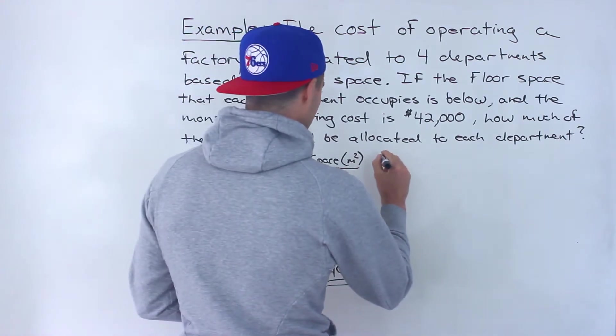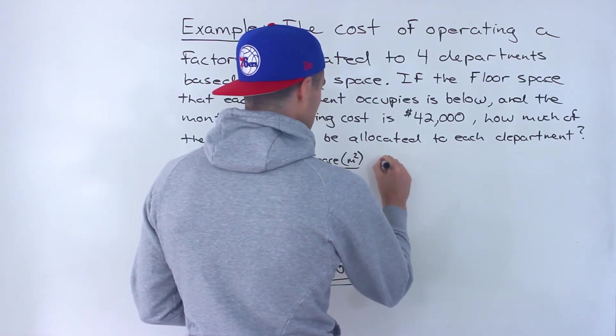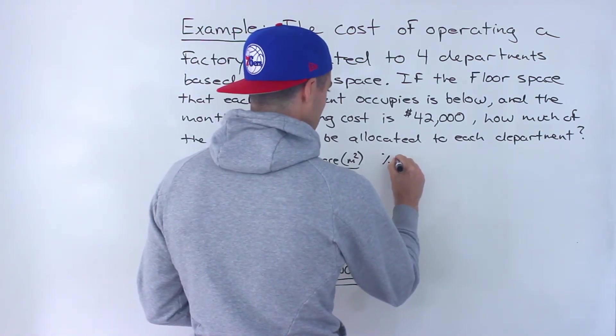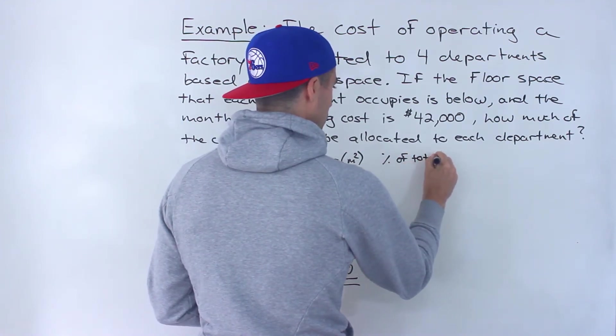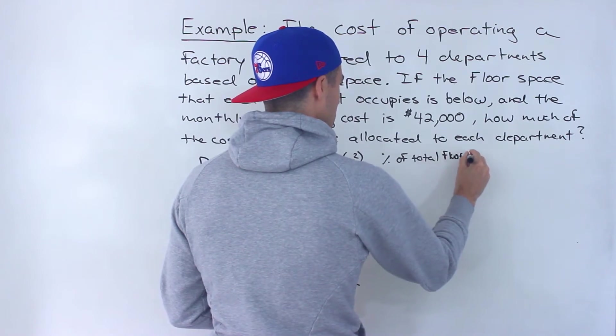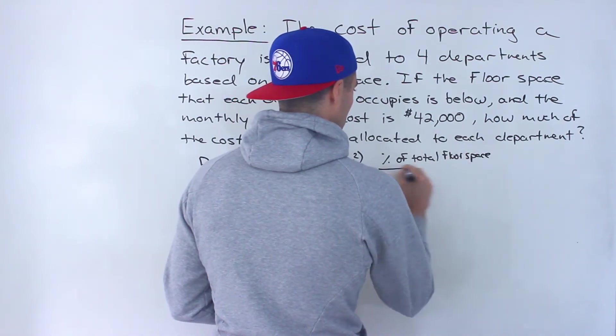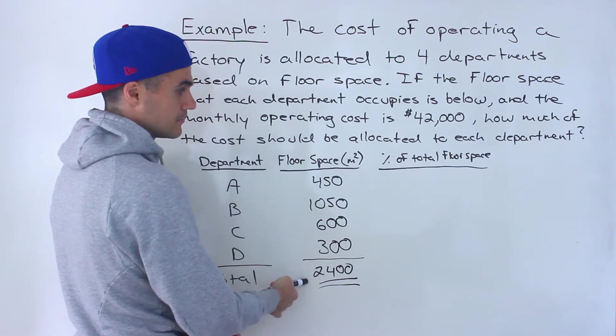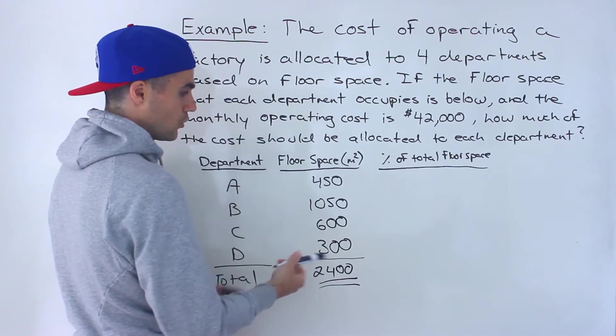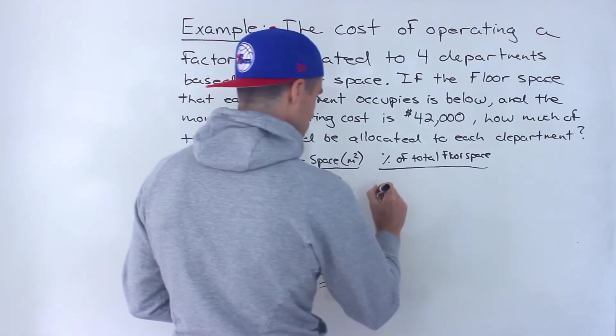And so now if we want to get the percentage of total floor space, what we can do is we could take this and divide it by that. So we can get a decimal or we can get a fraction. I'm going to be using fractions.